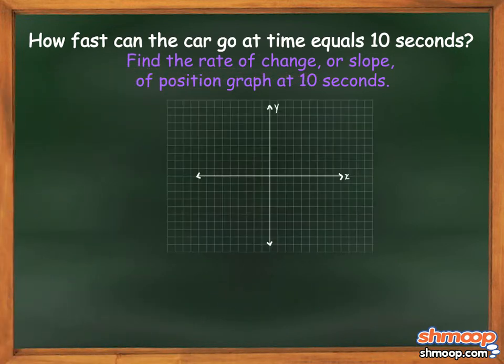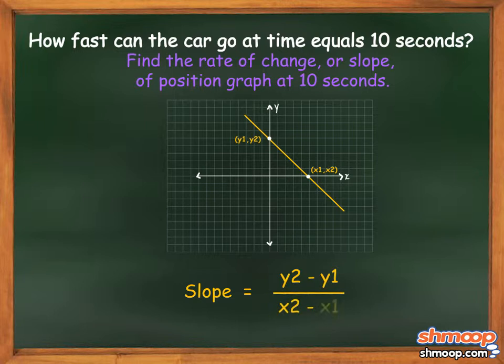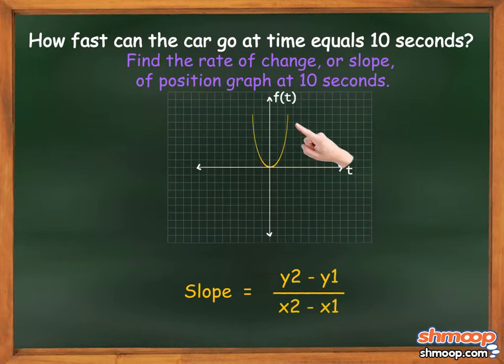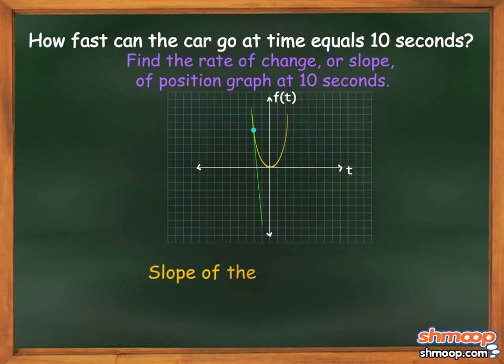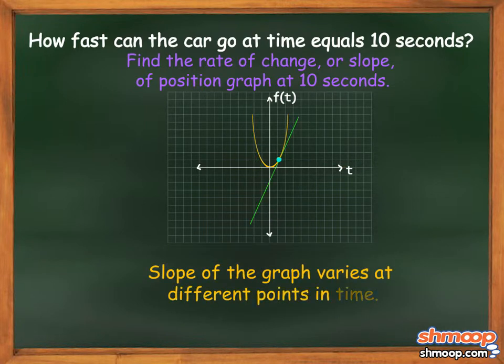Typically, we can find the slope of a line by taking two points on the line and taking the quantity (y2 - y1) over (x2 - x1). However, our position graph is a curve, not a line. This means that the slope of the graph varies at different points in time.